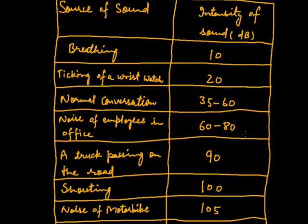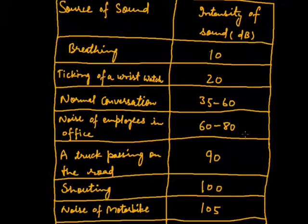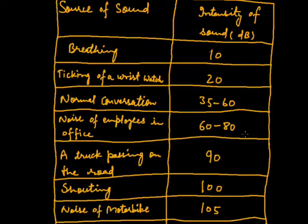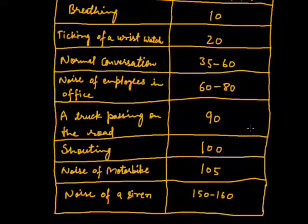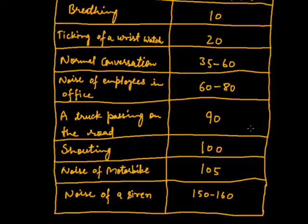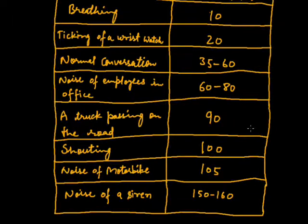The intensity of Sound of a truck passing on the road is 90 Decibel. If a person shouts, the intensity is 100 Decibel. The noise of a Motorbike intensity is 105 Decibel. The noise of a Siren in a factory is between 150 to 160 Decibel.